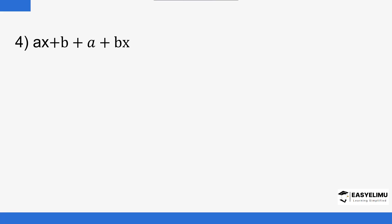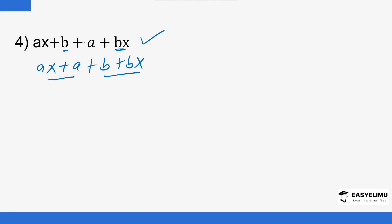Now, looking at this next expression, you are not able to see a common factor across all terms other than 1. In this case, you have to do grouping. As you group them, make sure the pairs have something in common. So I'll try grouping AX and A together — at least they share A — and then B and BX together.